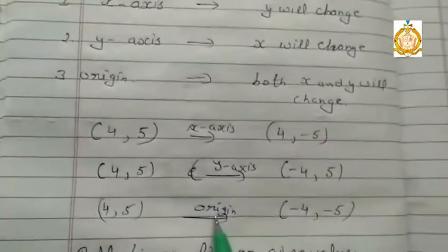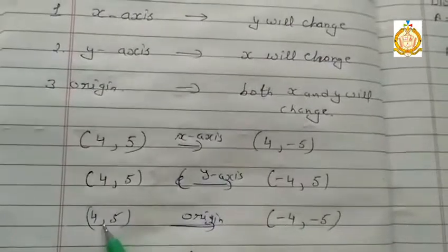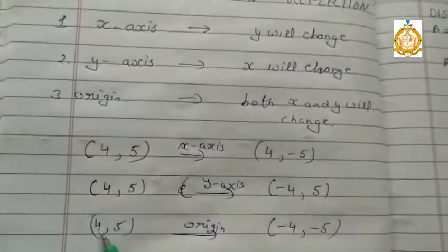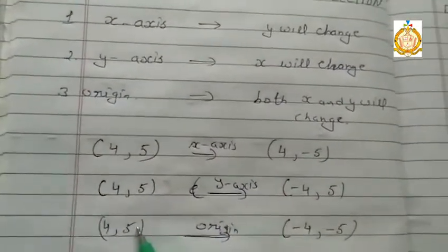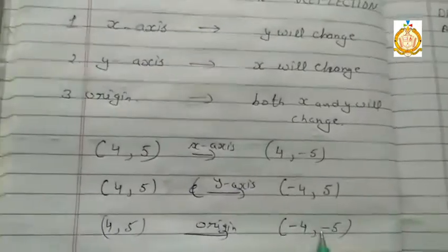If the reflection on origin, now x and y both will change. x positive 4 becomes negative 4, y positive 5 becomes minus 5.